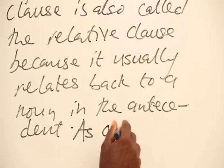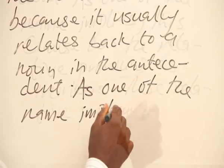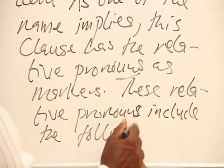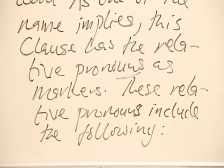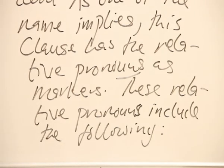As one of the names implies, the Relative Clause has clause markers called Relative Pronouns. Presently, we will mention these Relative Pronouns, but before I write them on the board, you should know that some of these Relative Pronouns are also clause markers for the Noun Clause. So we are not confusing them — at that point, you need to judge which is introducing the Noun Clause and which is introducing the Relative or Adjective Clause.